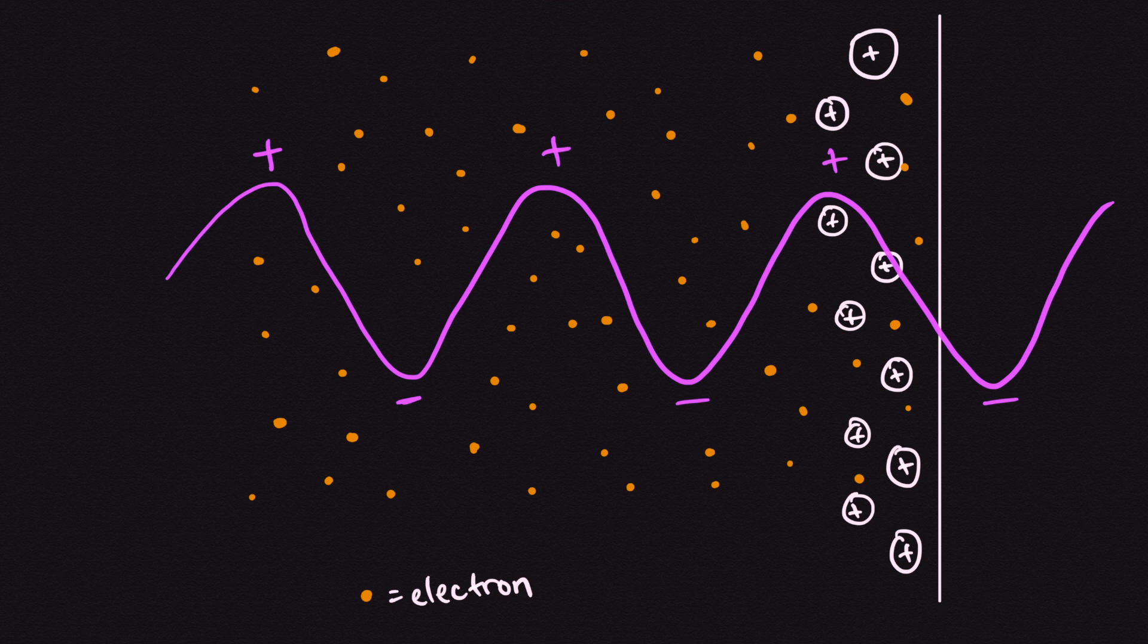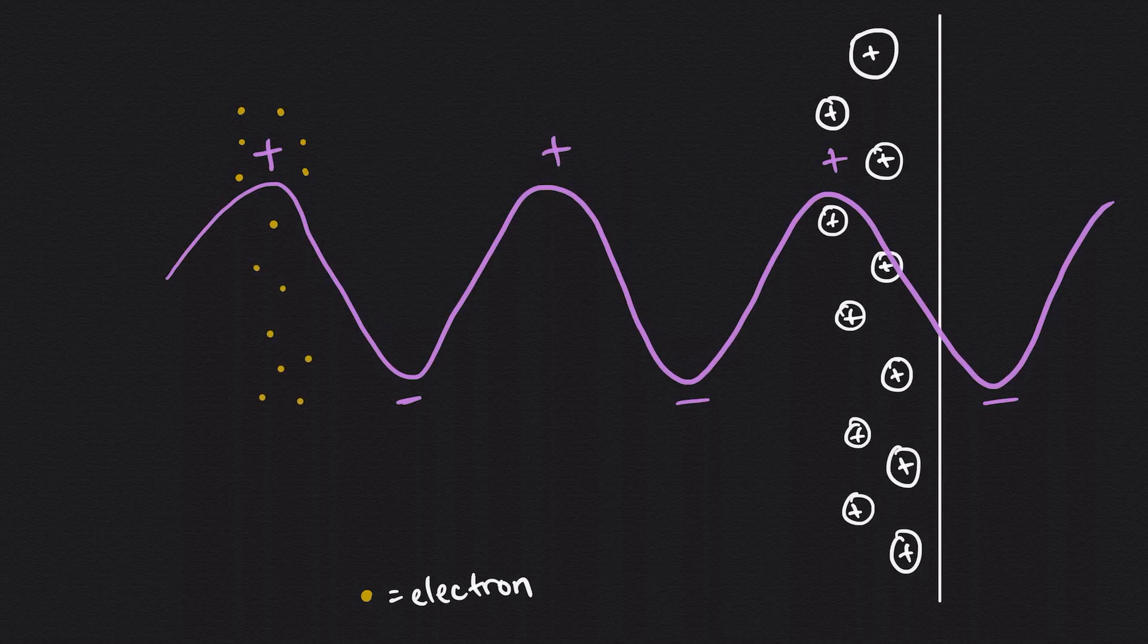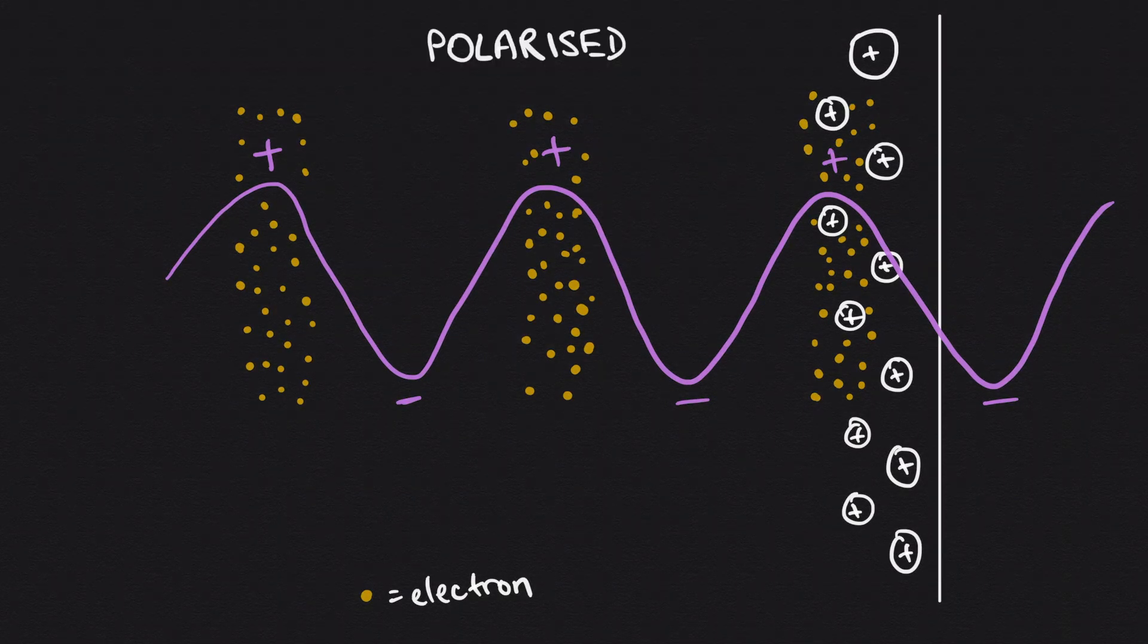Some areas become more positively charged, while others get negatively charged to mirror the polarity of that wave. Since the electrons are negatively charged, and like charges repel, they avoid negative charge and accumulate in the positively charged areas. The electron cloud is now polarized.